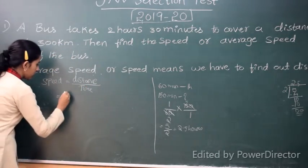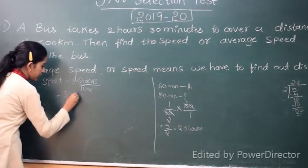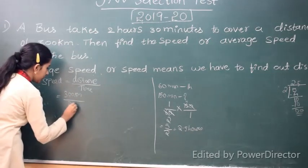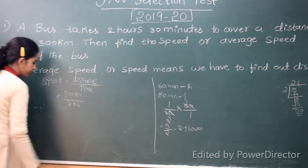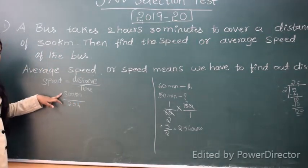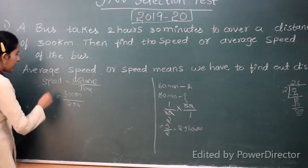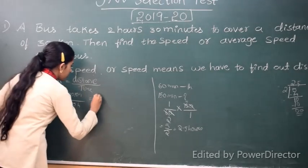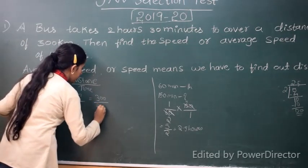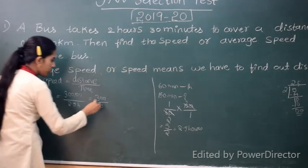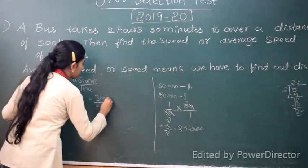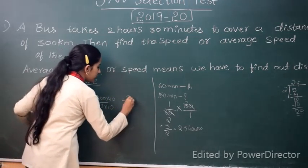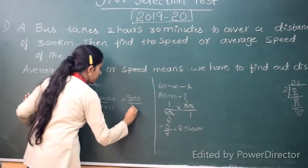So speed is equal to distance is 300 km and time is 2.5 hours. So it is difficult to divide 300 directly by 2.5. So I am converting decimal form into whole number form. So 300 by 2.5, I will multiply both sides by 10.